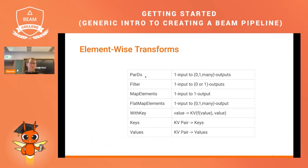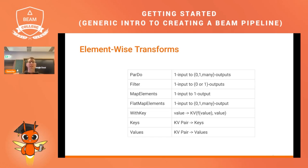There is a list of predefined element-wise transforms: ParDo, Filter, MapElements, and FlatMapElements. For key-value pairs, there are additional transforms — for instance, if you have just a value as input and want a key-value pair as output, or if you have a key-value pair and want just the keys using the Keys transform, or just the values as output.